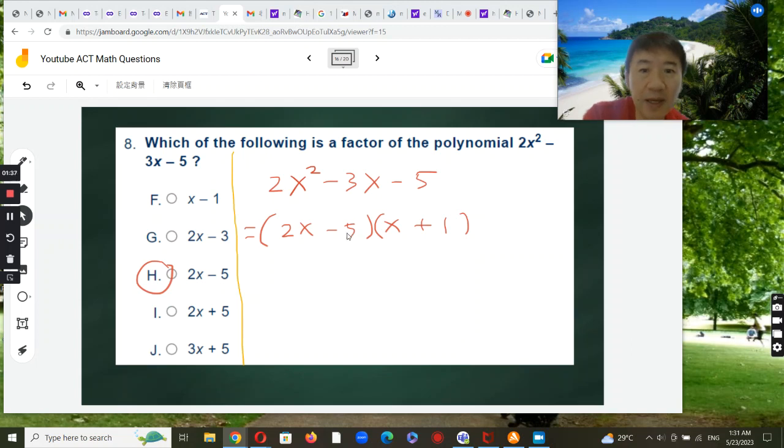yes? And then -5x plus 2x is -3x. So you got that.